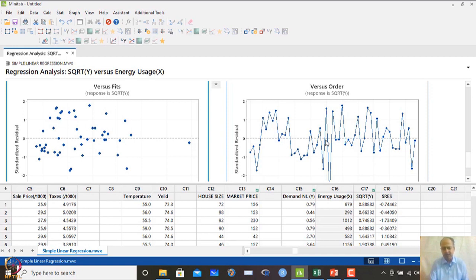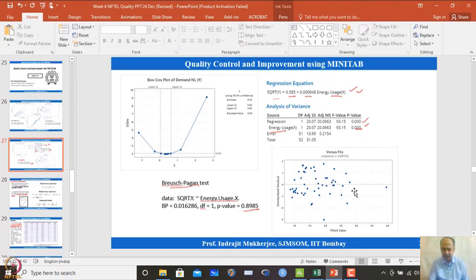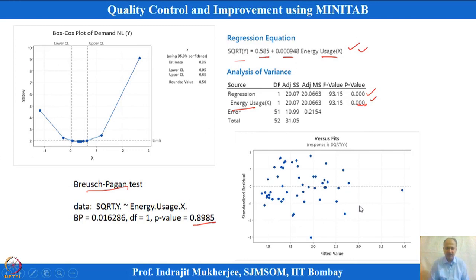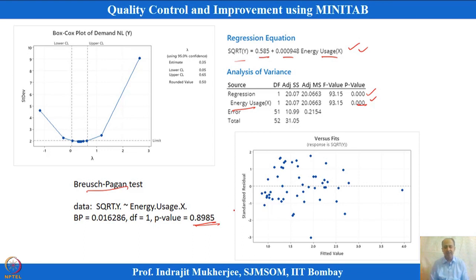We performed the Durbin-Watson test for autocorrelation on the transformed data — no problem found. The Bruch-Pagan test was also re-run on the residuals from the transformed model. The Bruch-Pagan p-value is 0.8985, which is greater than 0.05, confirming that the heteroscedasticity problem has been eliminated using the Box-Cox transformation.